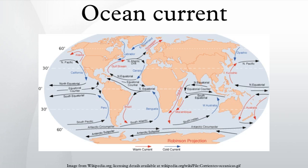Surface ocean currents are generally wind-driven and develop their typical clockwise spirals in the Northern Hemisphere and counterclockwise rotation in the Southern Hemisphere because of the imposed wind stresses. In wind-driven currents, the Ekman spiral effect results in the currents flowing at an angle to the driving winds. The areas of surface ocean currents move somewhat with the seasons, most notably in equatorial currents.